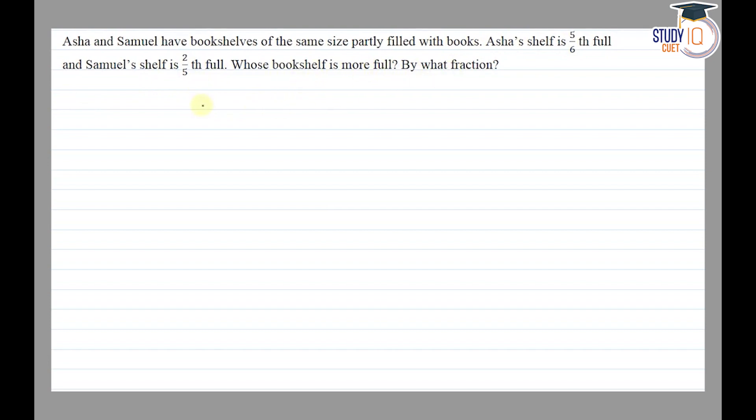So given: Asha and Samuel. The fraction of bookshelves filled - given Asha 5 by 6 and for Samuel 2 by 5.